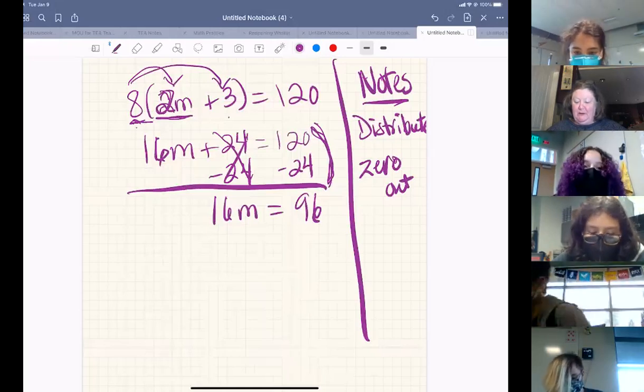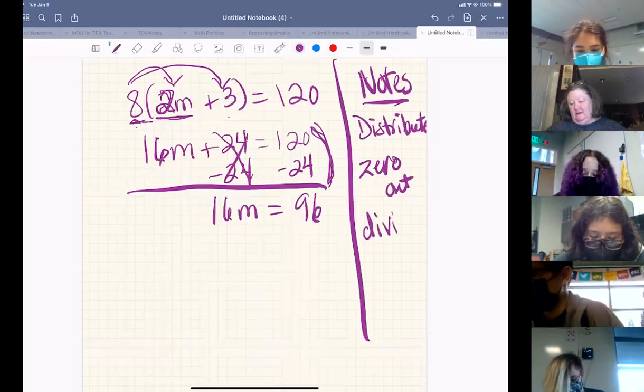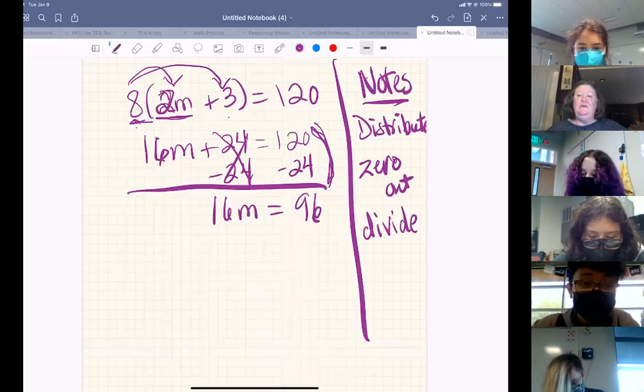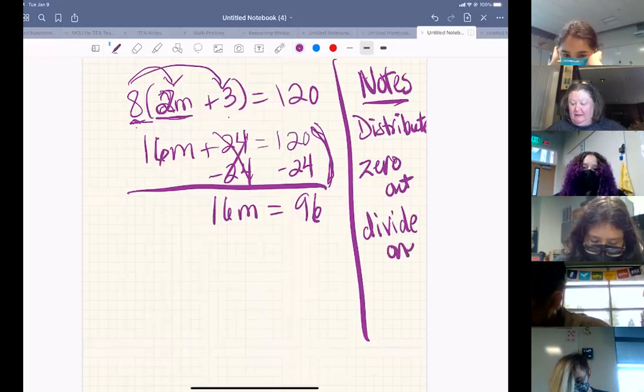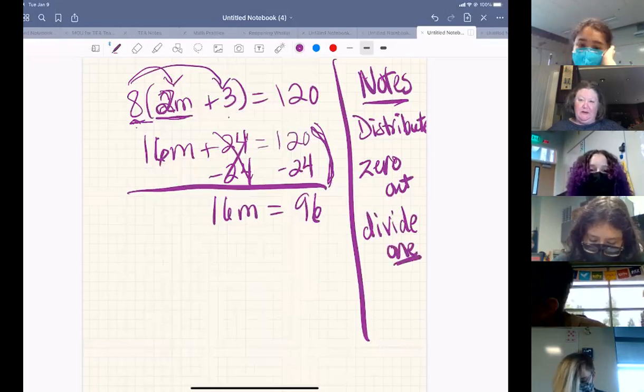So remember what the next thing we're looking to do is. Yes, you're right Carly, we want to divide. We want to turn that number in front of the variable into a positive invisible one. And in this case, because it's multiplication, we're going to divide.